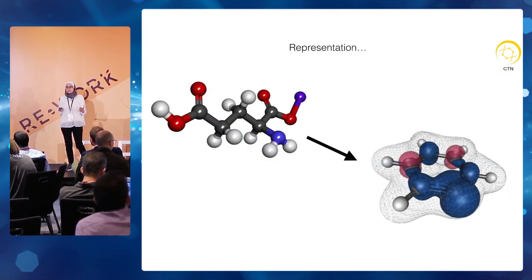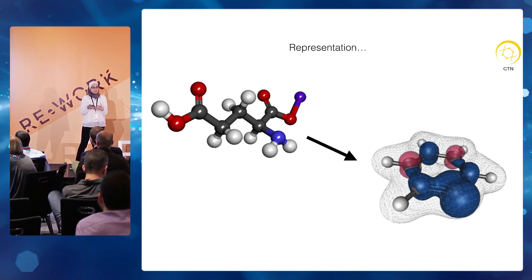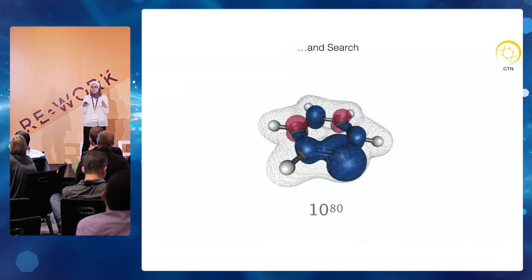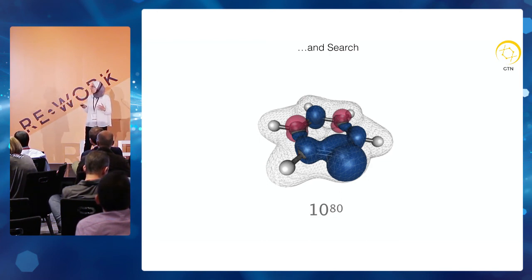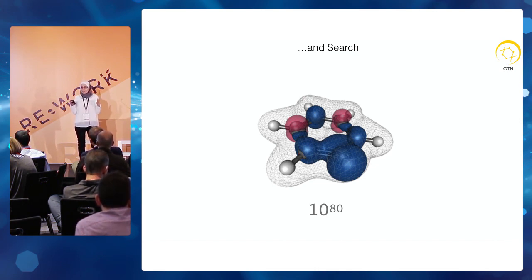The low accuracy in predictions is because the current state of the art works on a very simplified version of molecules — basically ball-and-stick models. They either represent molecules as strings, which is a very simple representation, or as graphs. In reality, molecules look like wave functions with quantum properties that have to be taken into account. The other problem is the huge search space: when searching for a drug that binds to a specific protein, the space is 10 to the power of 80 — more than the number of atoms in the entire universe.